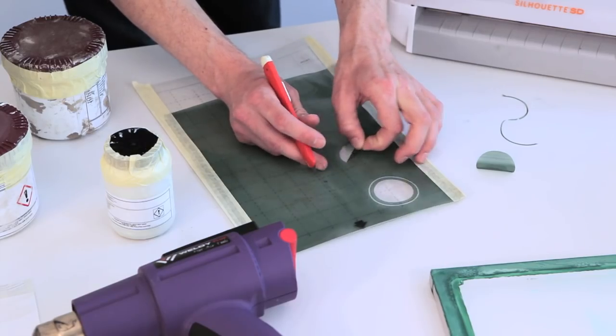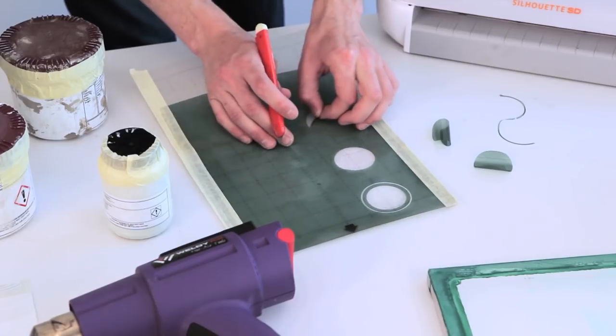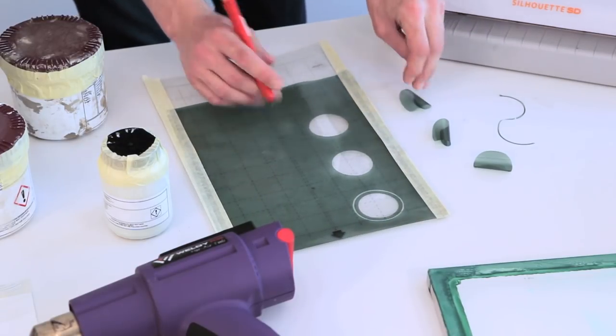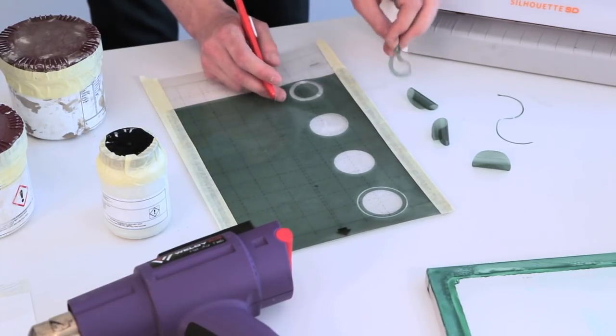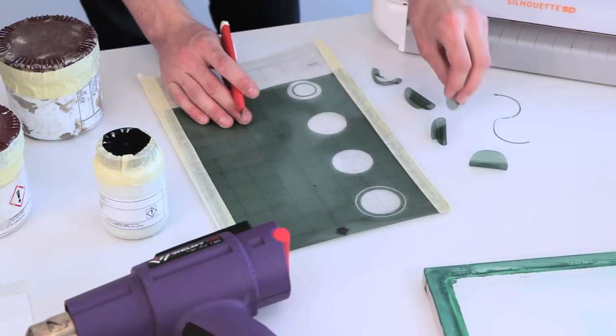Once we have our designs, we can begin cutting them from the film. This is a water-soluble film that adheres to the screen. You can use a cutting machine like here, or you can also cut these by hand.